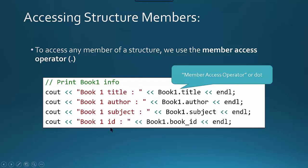Once you have your structs created and some variables using that struct, you can use the variable name and the dot operator to access the elements of a struct. So here, for example, if we wanted to output the title, author, or subject of the book, we would say book1.title, book1.author, book1.subject. This entire expression is the identification of the variable — it's not just 'title', it's 'book1.title'. The way you access the members of a struct variable is with the dot operator.